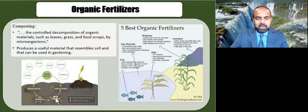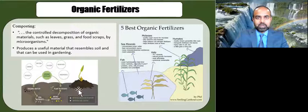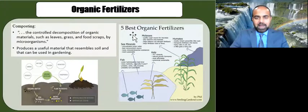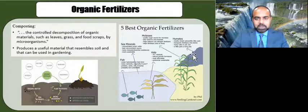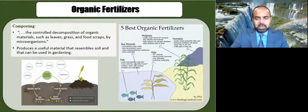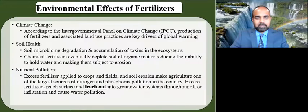Organic fertilizers can enrich the soil by providing soil nutrition, which in turn gives plants their nutrition. Five of the best organic fertilizers are humus, molasses, kelp, sea minerals, and fish.